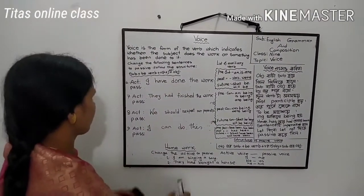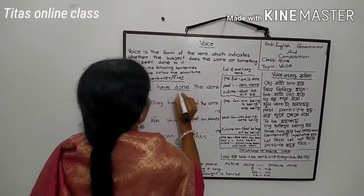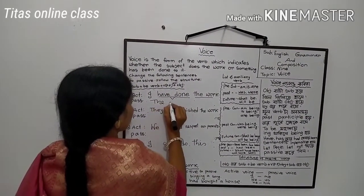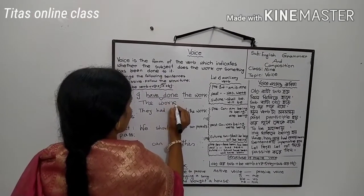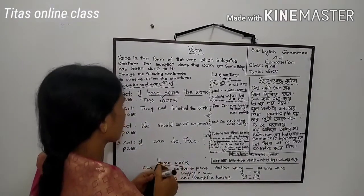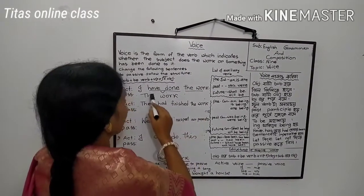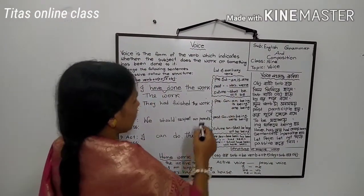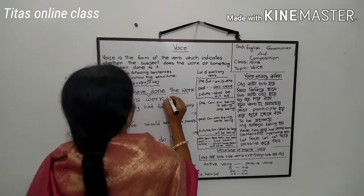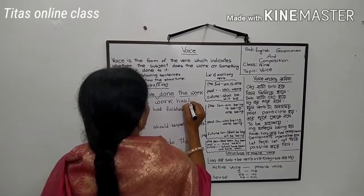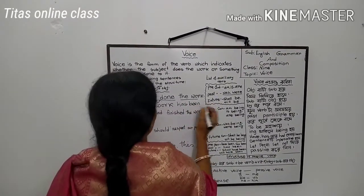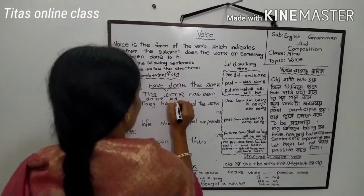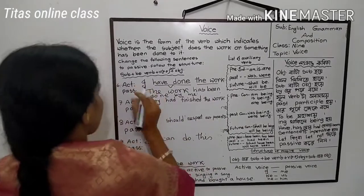Another example: 'I had done the work.' 'Have,' 'has,' or 'had' plus verb in past participle form are used in the perfect tenses. So we must use the auxiliary verb 'has been' or 'have been' in the passive voice: 'The work has been done by me.' Note: 'I' is the subjective form and 'me' is the objective form.